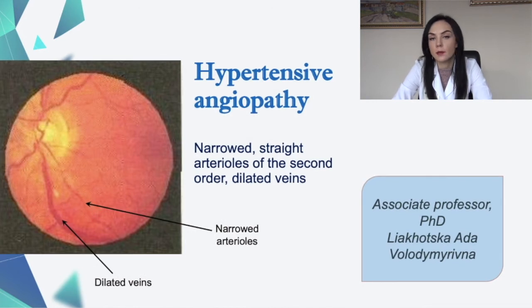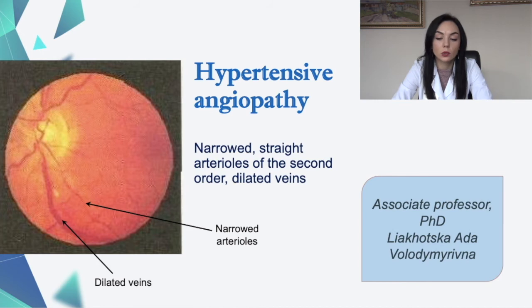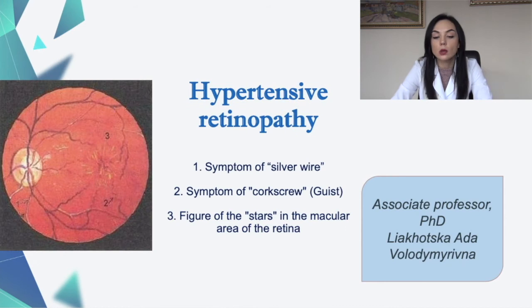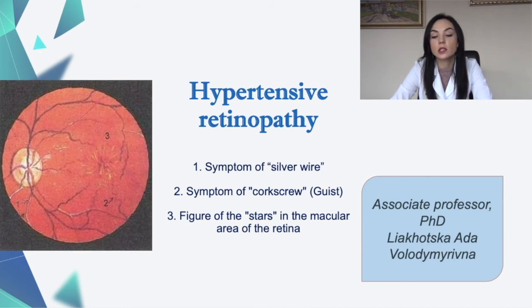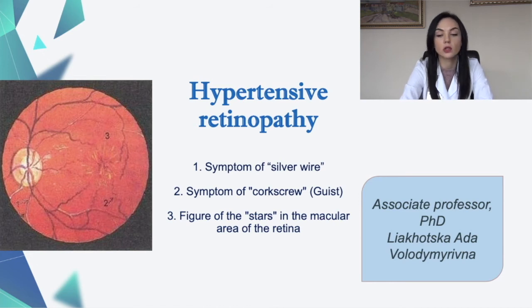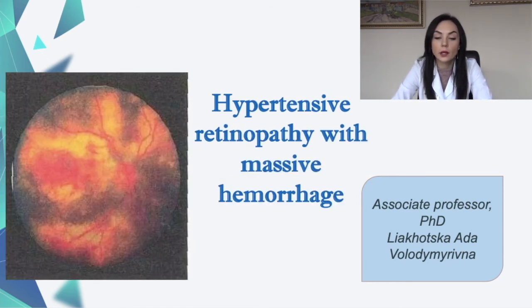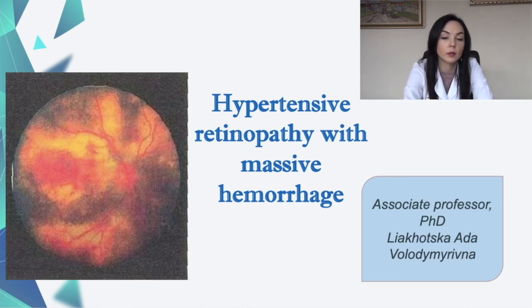In this picture, you can see damage to the retina — hypertensive angiopathy — with narrowed arterioles of the second order and dilated veins. Note the dilated veins on the left and narrow arteries on the right. Additional signs include the symptom of silver wire, symptom of Gunn-Salus (arteriovenous nicking), and features of stars in the macular area of the retina. You can also see hypertensive retinopathy with massive hemorrhage during high blood pressure.